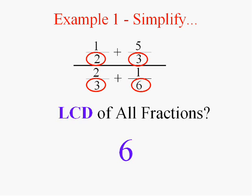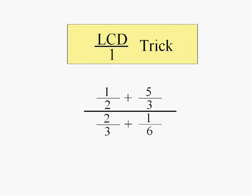Now, what is the trick? What are we going to do with six? I call this the LCD over one trick. We're going to take six and form it into the number one. How are we going to do that?